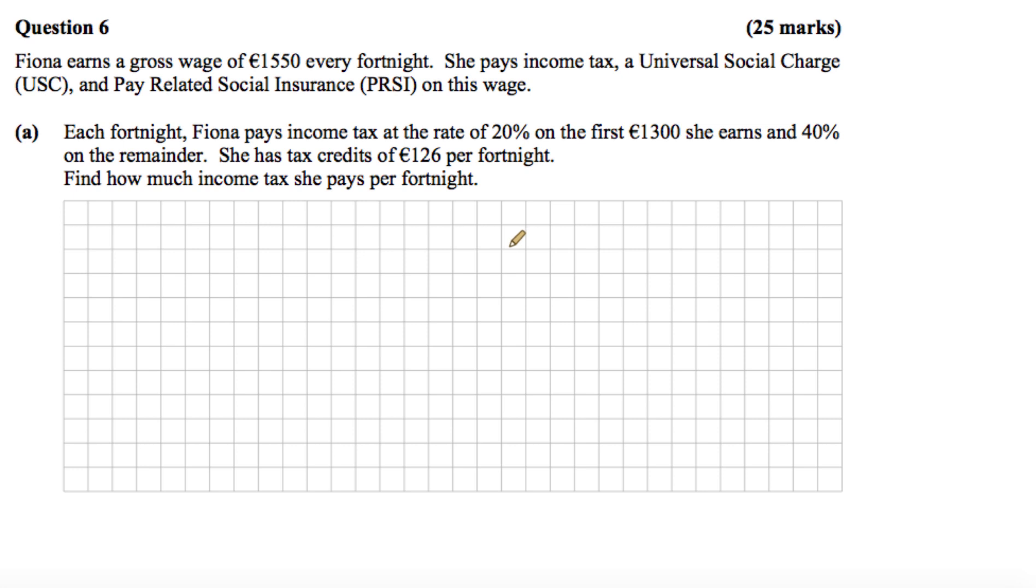Okay, so the first thing we can do is find 20% of the first €1,300. Well, 20% as a decimal is equal to 0.20 or 0.2. So we're going to multiply €1,300 by that. So €1,300 times 0.2 gives us €260.